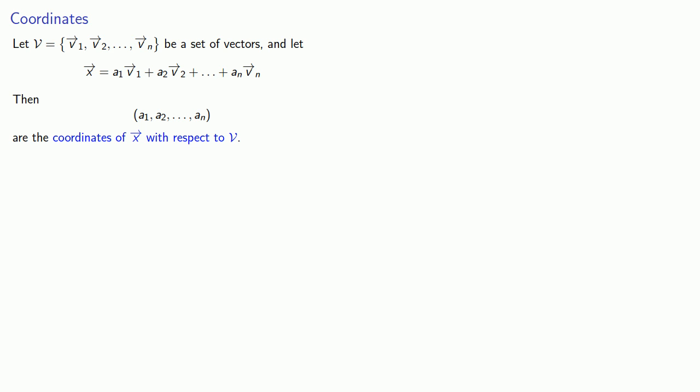At this point we haven't committed ourselves to what this vector set v looks like. But if v is a basis for some vector space V, then the coordinates of this vector x will be unique and conversely. And this is something you should be able to prove.